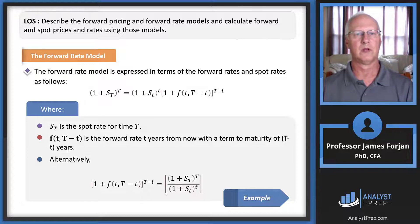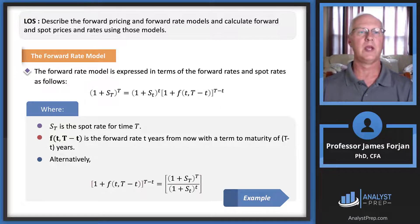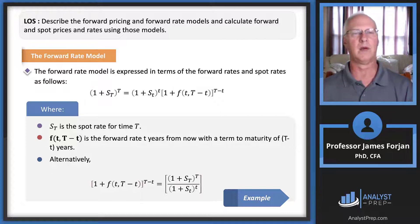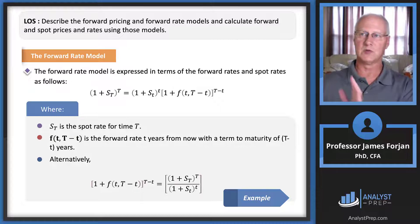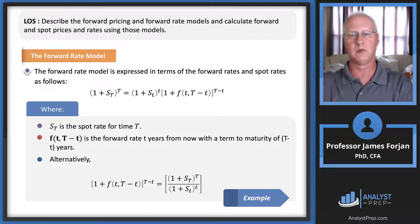The forward rate model can be expressed in terms of both forward rates and spot rates, as shown in the top equation. Rearranging to solve for the forward rate gives us essentially (1 + spot rate for T) divided by (1 + spot rate for t), being careful about the distinction between uppercase T (maturity) and lowercase t (when borrowing begins).